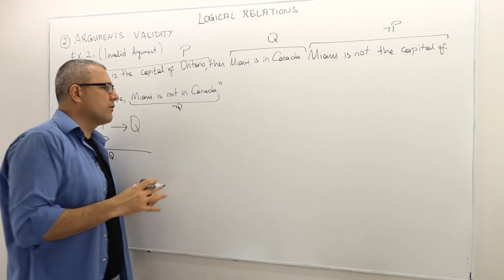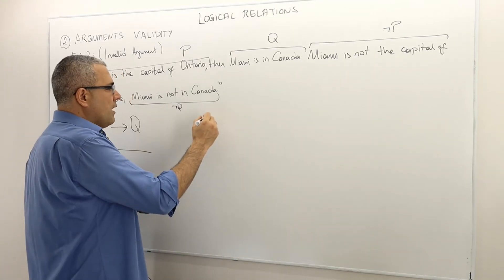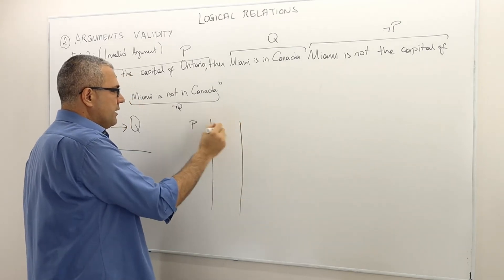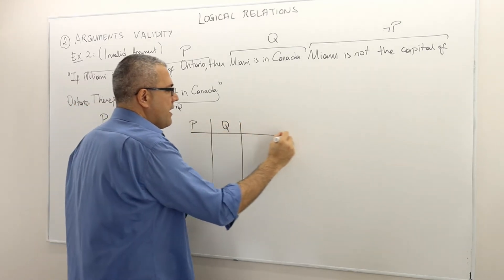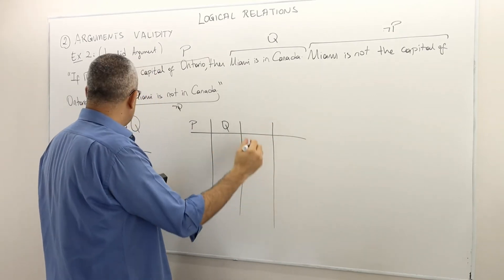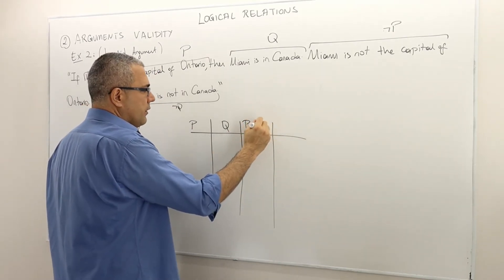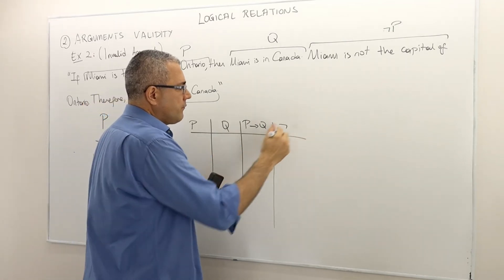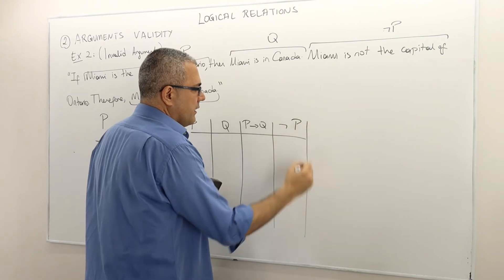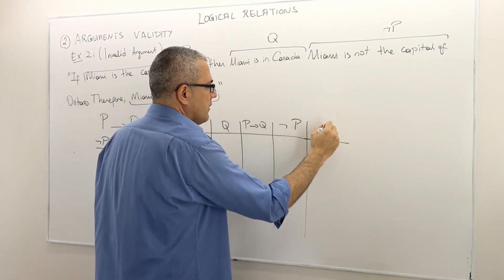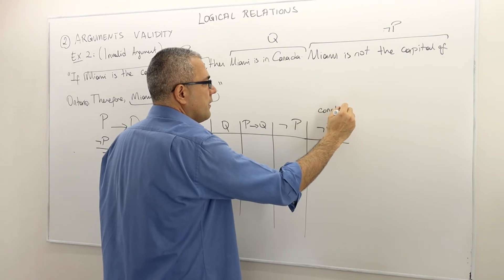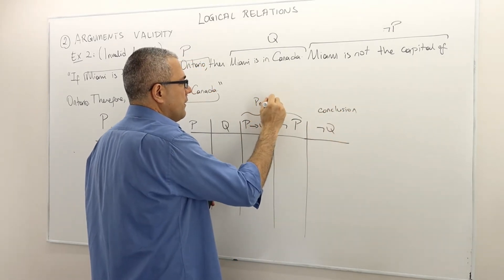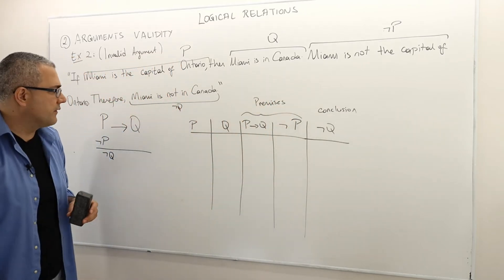So how do we construct the truth table? Because there are two atomic sentences, I'm going to write P here and Q here. There are two premises: premise one is P implies Q, and premise two is not P. And then finally, the conclusion is not Q.